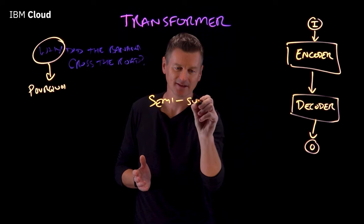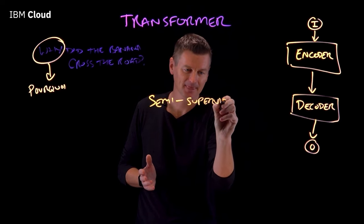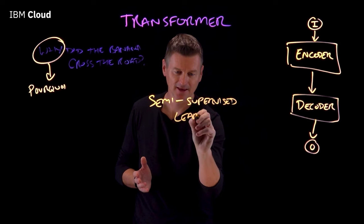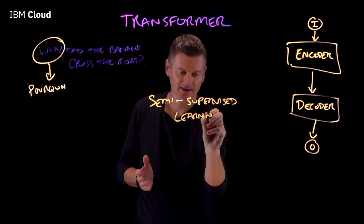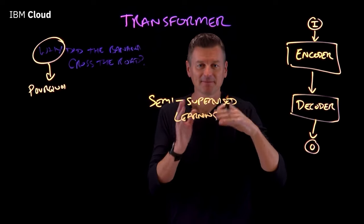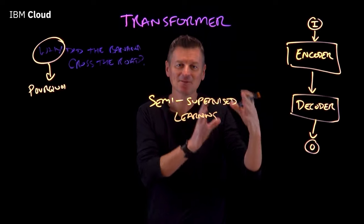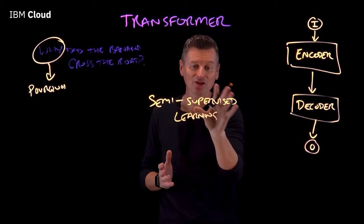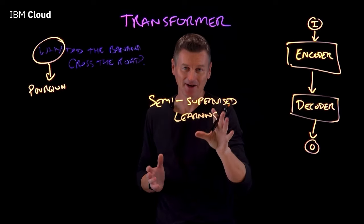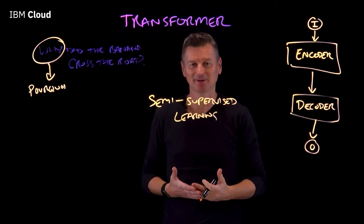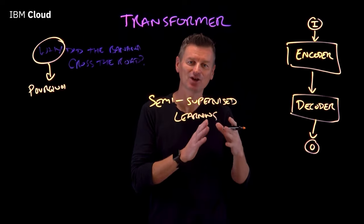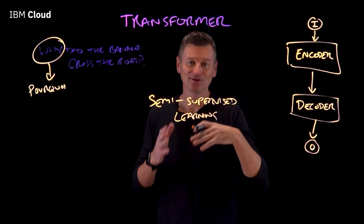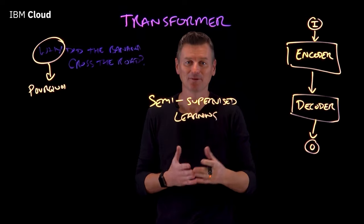Transformers are a form of semi-supervised learning. By semi-supervised, we mean that they are pre-trained in an unsupervised manner with a large unlabeled dataset, and then they're fine-tuned through supervised training to get them to perform better.